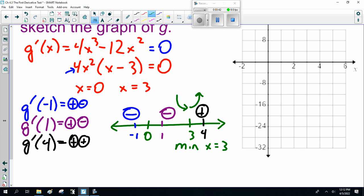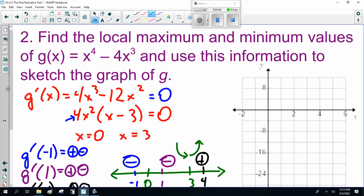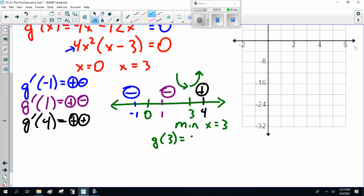So here it goes from negative, it's going down up to positive, so we have our minimum at x equals 3. Now, at x equals 3, we go back to the original function to find g of 3, x to the 4th minus 4x cubed. That's minus 27, because that's 81 minus 4 times 27.